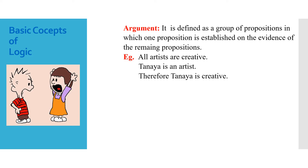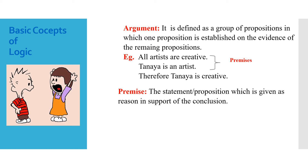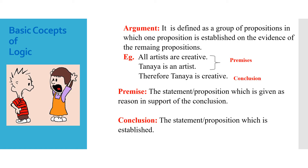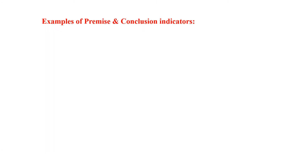Let us take an example. All artists are creative. Tanaya is an artist. Therefore, Tanaya is creative. Here the evidences — all artists are creative, Tanaya is an artist — are the reasons, so they are called premises in logic. The statement or proposition given as reason in support of the conclusion is called a premise. And 'therefore Tanaya is creative' is the conclusion — the statement or proposition which is established.